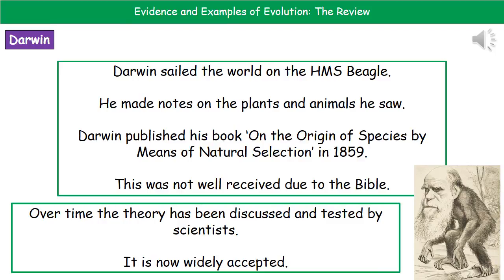Welcome to our review on evidence and examples of evolution. The first person we're going to look at is Charles Darwin. What Darwin actually did was he went on the HMS Beagle and sailed around the world on it.